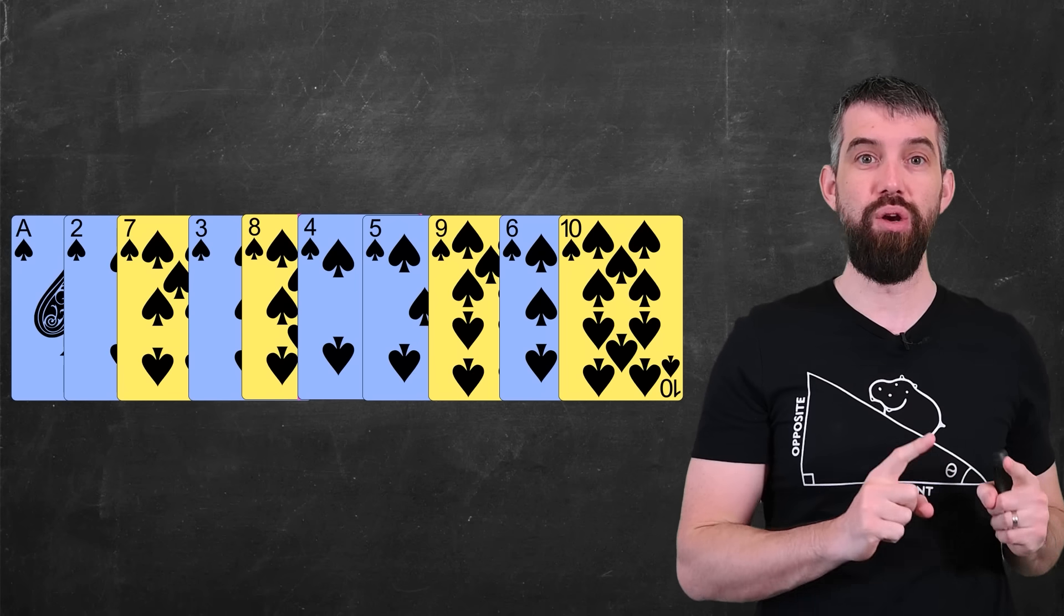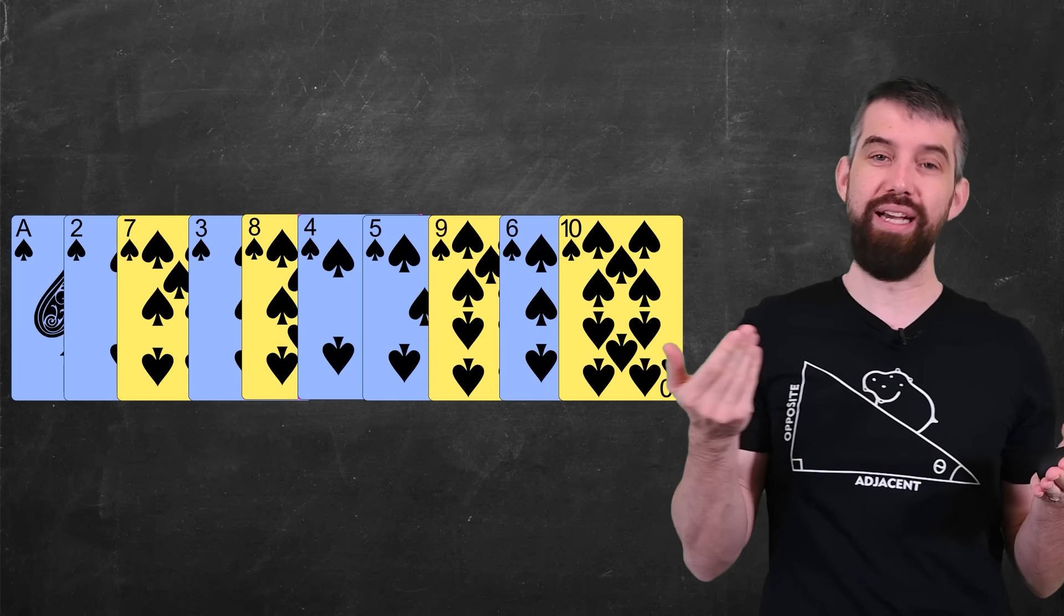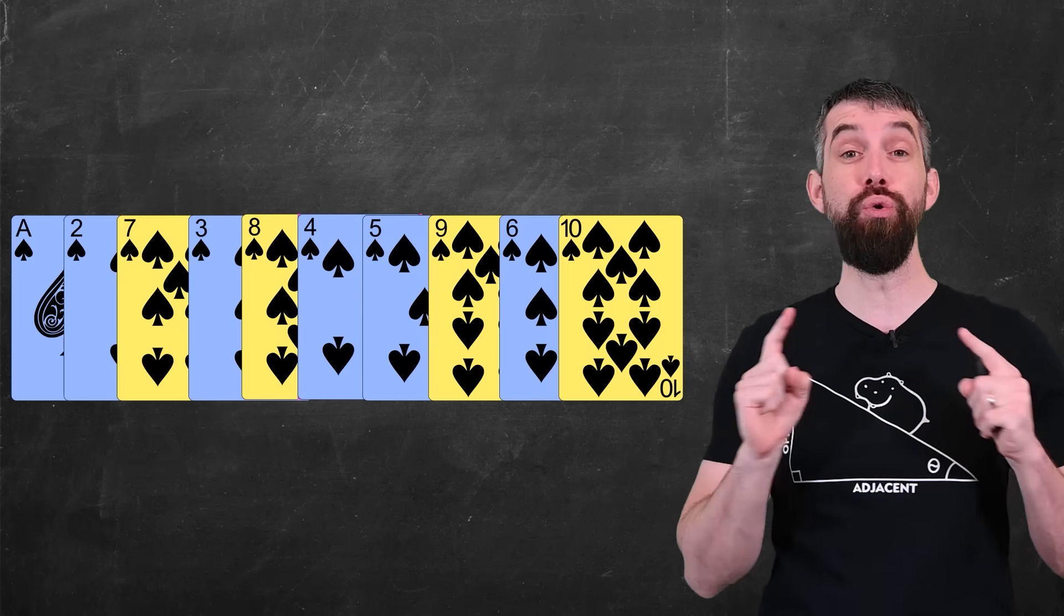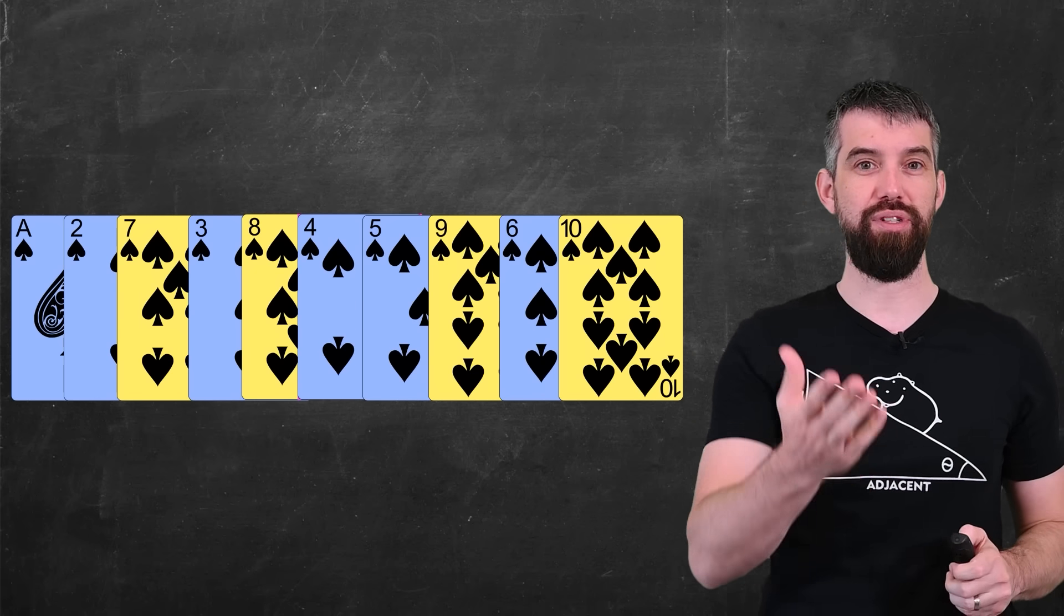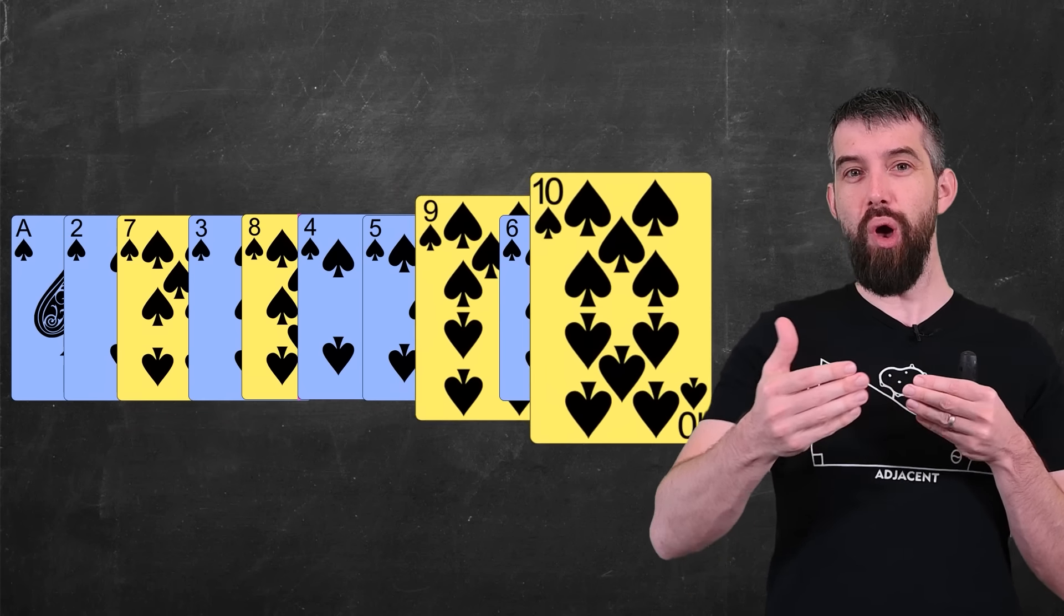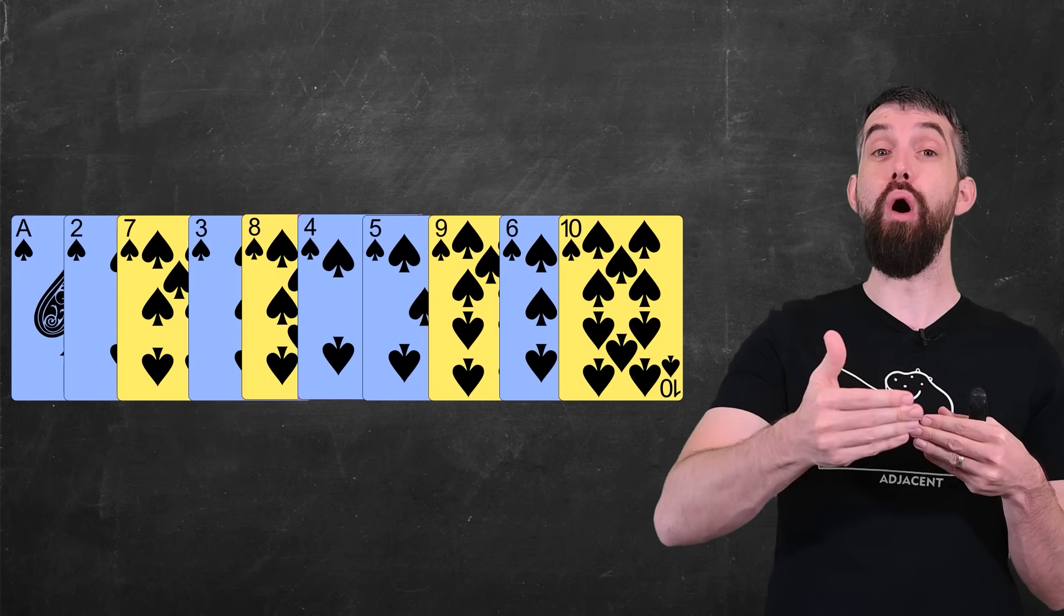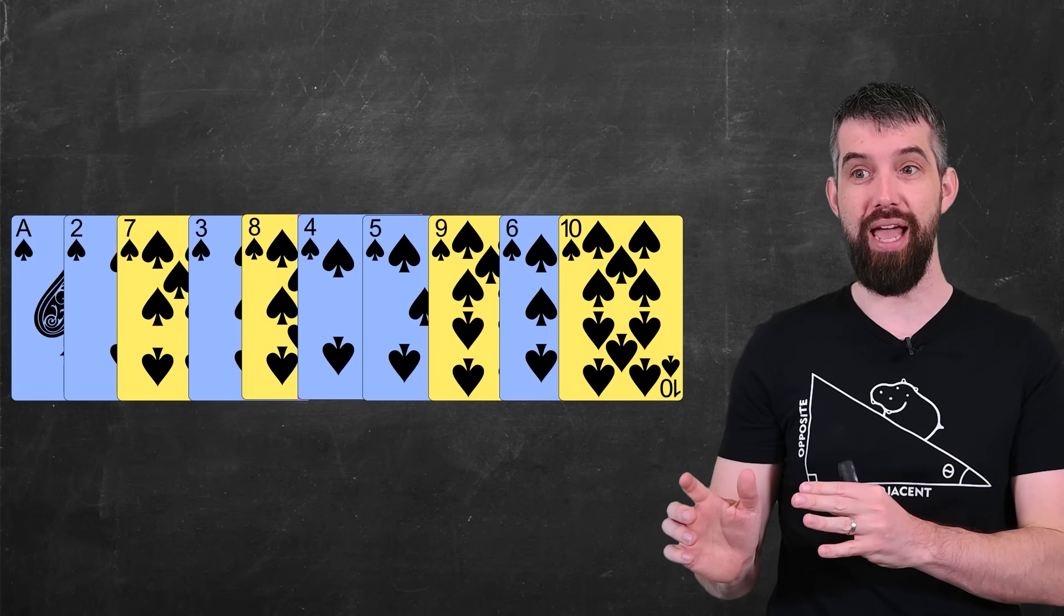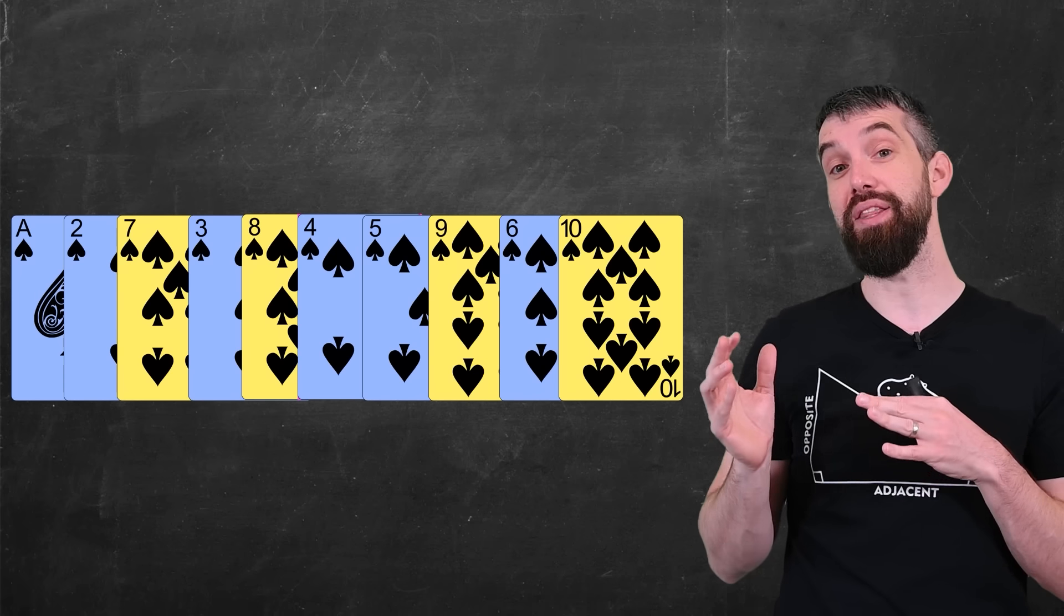And again, the key thing to notice here is that the one ascending sequence of cards, after a shuffle has become two ascending sequences of cards. For example, I have that 7, 8, 9, 10. Again, they're not directly beside each other, but they are all in order. That's what I consider a rising sequence. And Ace, 2, 3, 4, 5, 6 is the other.